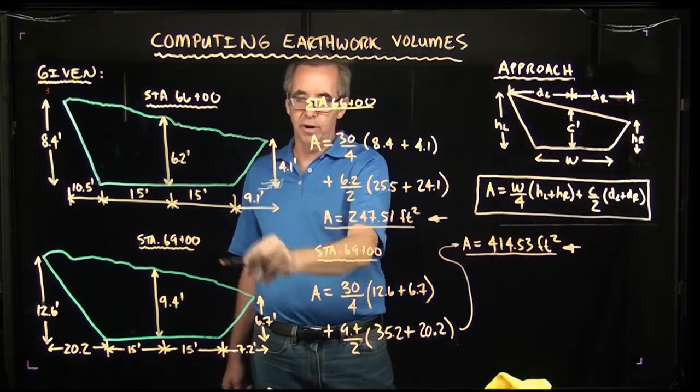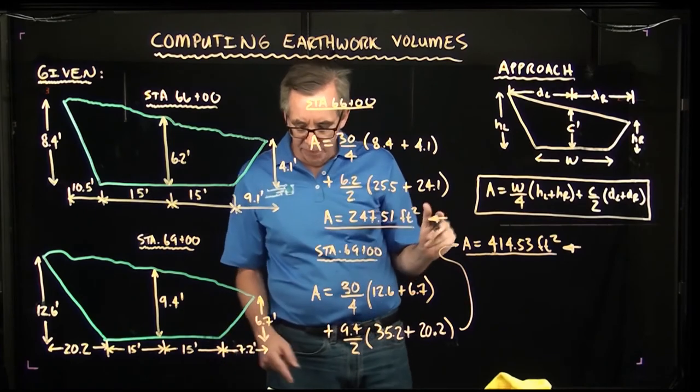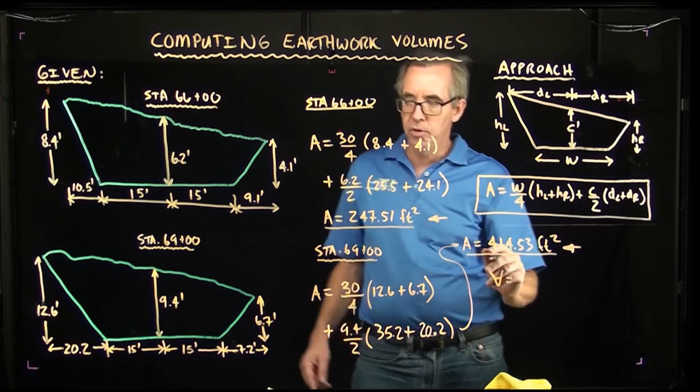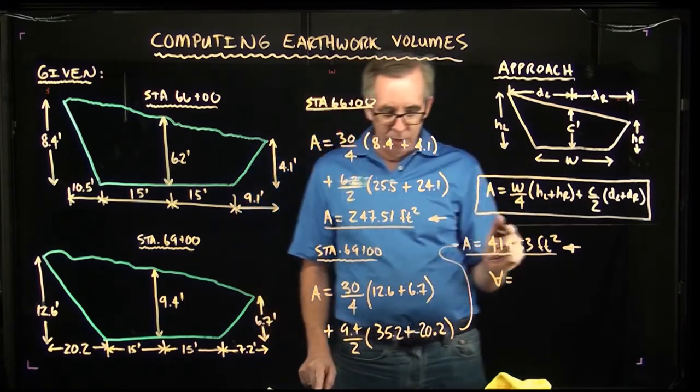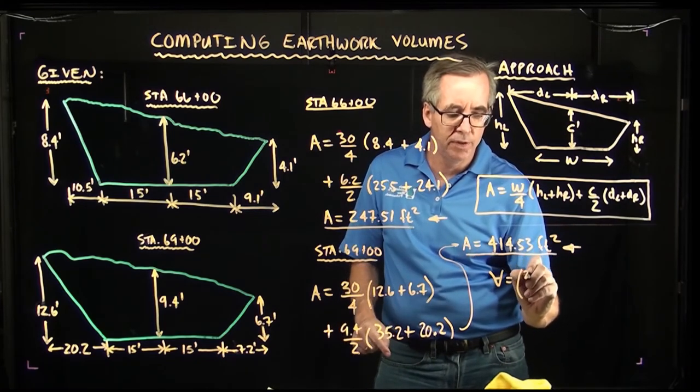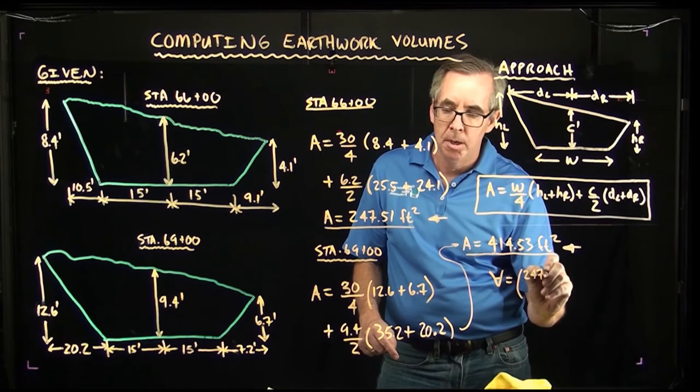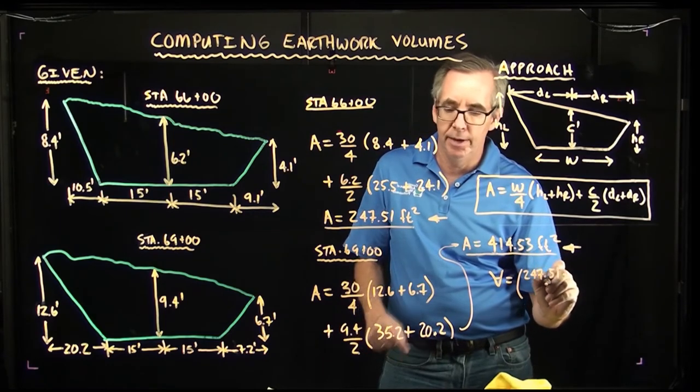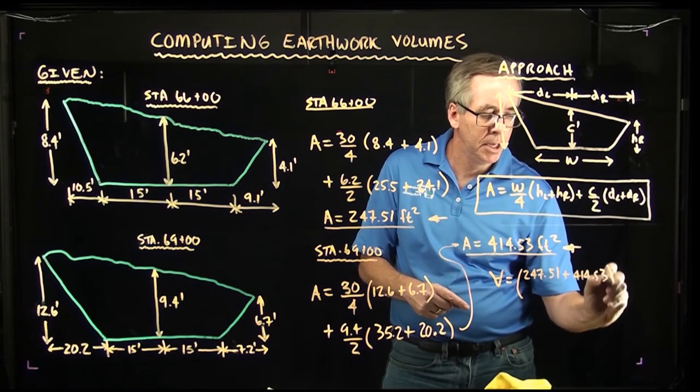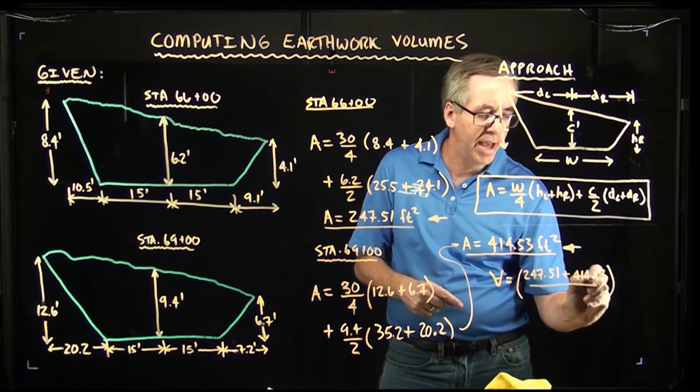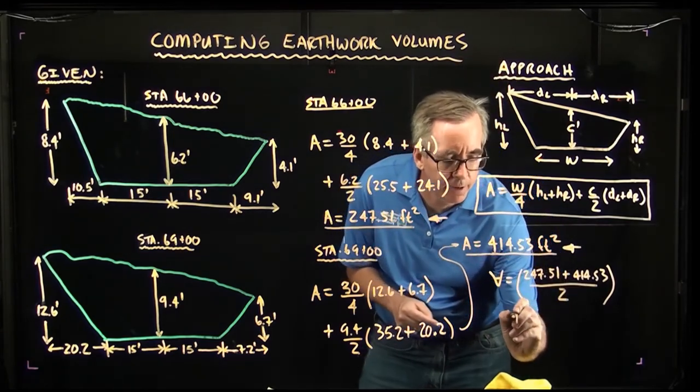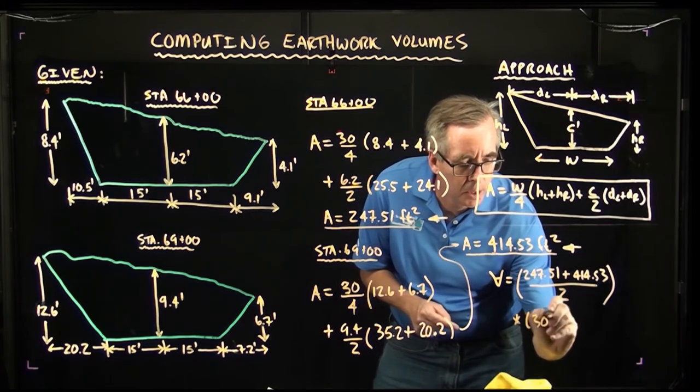And for us to get the volume, we're going to have to multiply the average of these two areas. So I'm going to say 247.51 plus 414.53, taking the average of that, so we divide by 2, and we're going to multiply that times the length, which is 300.